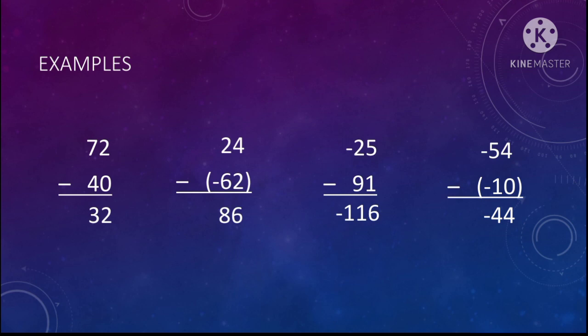Another example: negative 72 minus 40. Positive minus positive — since 72 is greater than 40, the positive sign is copied. So 72 minus 40 is equal to 32.